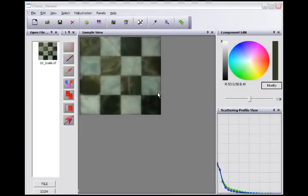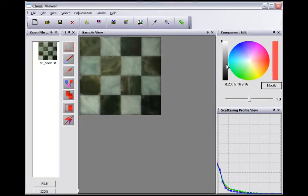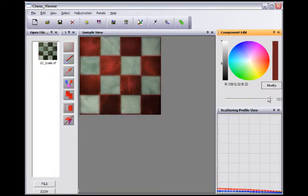For intuitive editing, we further re-parameterize the scattering profile as albedo, scattering range and profile shapes. As shown here, editing the albedo alters the color. The scattering range controls the translucency of each point, while the profile shape adjusts the texture details within the scattering range.